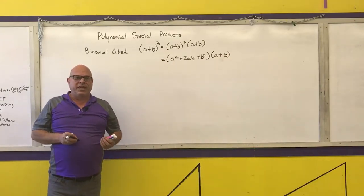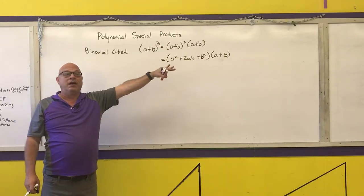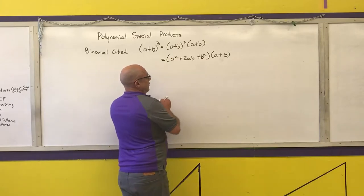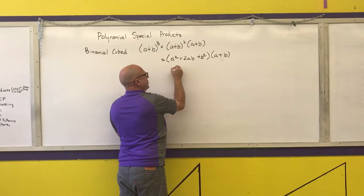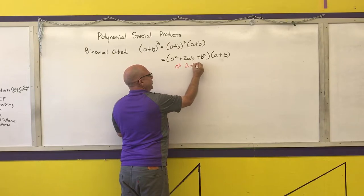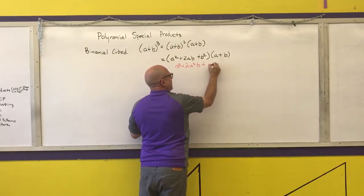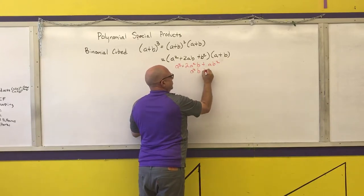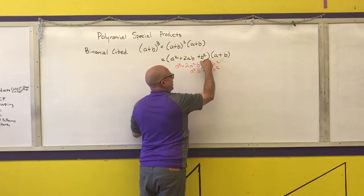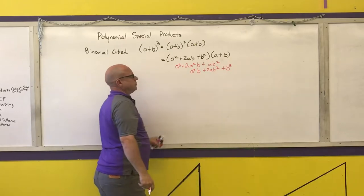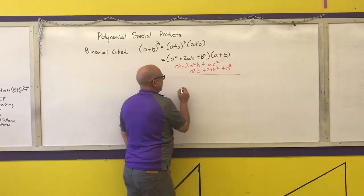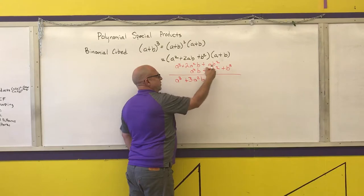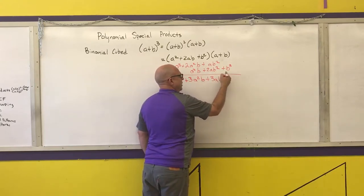I'm going to do one more multiplication using the distributive property. A times a squared is a cubed, a times 2ab is 2a squared b, a times b squared is ab squared. Then b times a squared is a squared b, b times 2ab is 2ab squared, and b times b squared is b cubed. Adding these up: a cubed, plus 3a squared b, plus 3ab squared, plus b cubed.